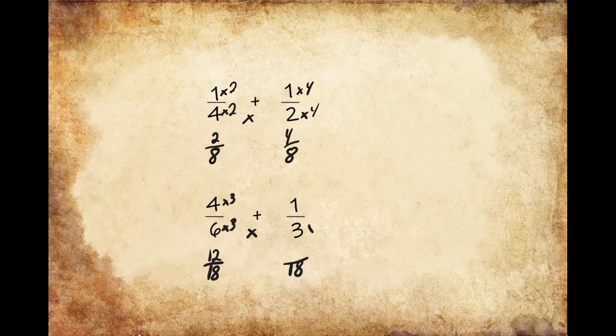And I had to multiply 3 times 6 in order to get 18, so I need to multiply the numerator up top by the same value. And 1 times 6 gives us 6.